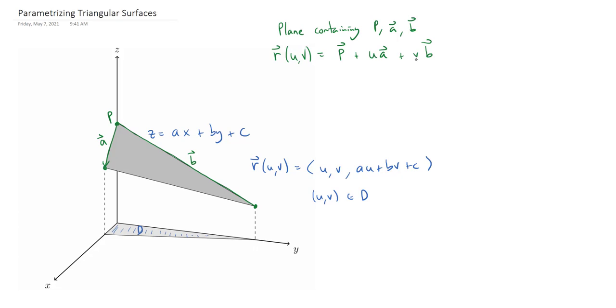Then we can just let u and v cover all real numbers. So u and v will lie between negative infinity and infinity. But if we just want this particular triangular surface here, we're not allowed to let u and v be anything we like. We're actually going to want to restrict them quite a bit.